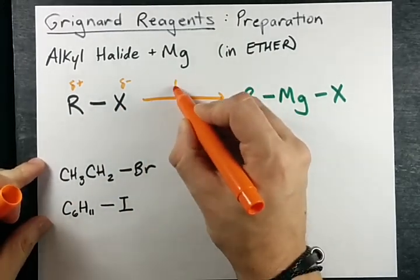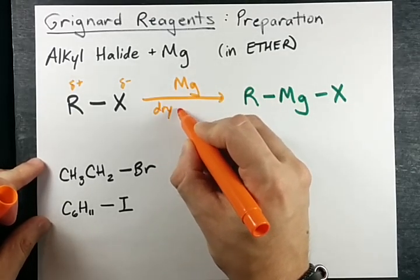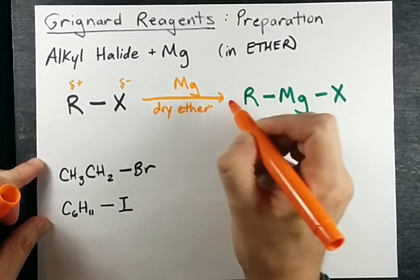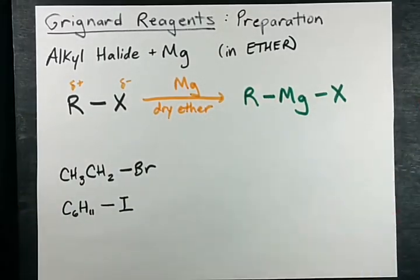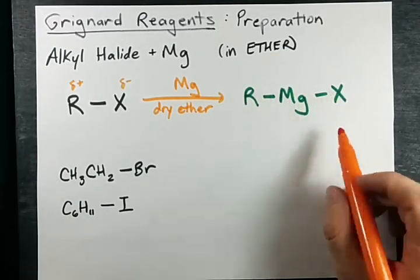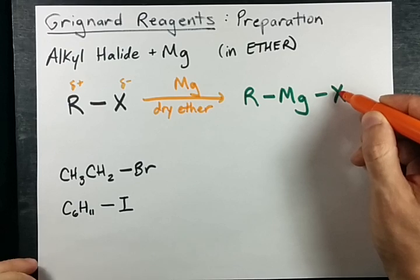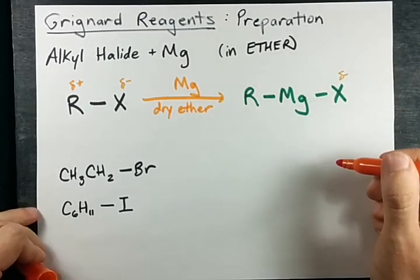But by adding magnesium - and by the way, it has to be in ether. You can't have water around because water will react with this and you'll get something completely different than you want. We put the magnesium in between the two. Now, this halogen is still electronegative, so it's probably delta minus.